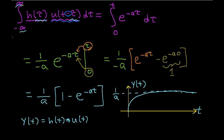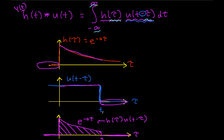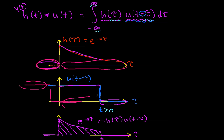One thing we need to do before we're done: our picture assumes that t is greater than 0. If t were less than 0, I would have a picture where u of t minus tau is non-zero only in a region where h of tau is 0, and everywhere that h of tau is non-zero, u of t minus tau would be 0. So when t is less than 0, the product of h of tau and u of t minus tau is always 0, which means the integral will always be 0.